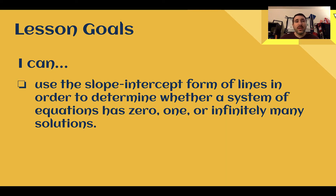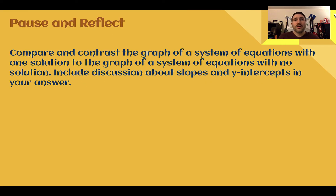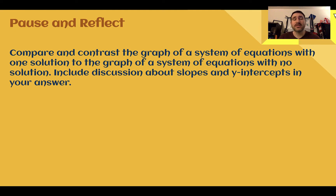After this lesson, you need to be able to use the slope-intercept form of lines in order to determine whether a system of equations has zero, one, or infinitely many solutions. First, pause and reflect: compare and contrast the graph of a system of equations with one solution to the graph of a system of equations with no solution. Include discussion about slopes and y-intercepts in your answer. See what you can remember from the last lesson. Pause the video now and write down your thoughts.